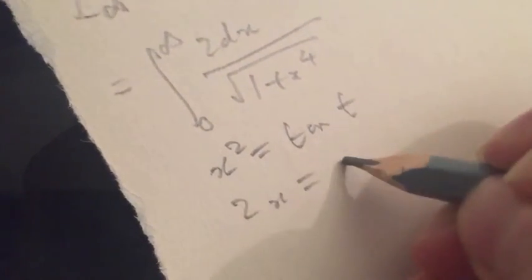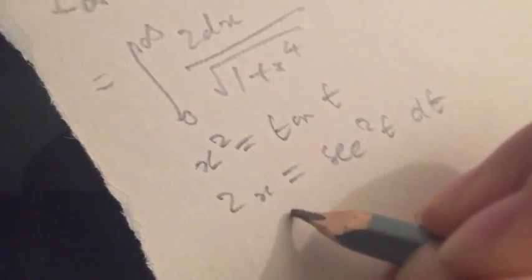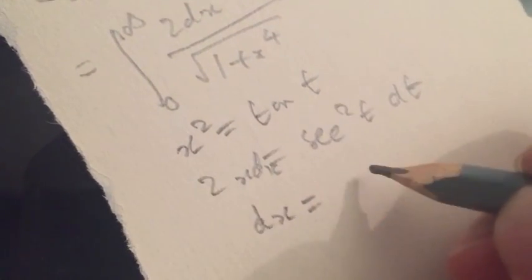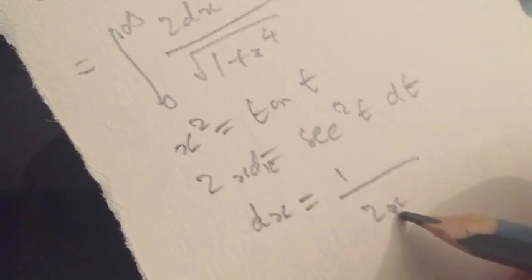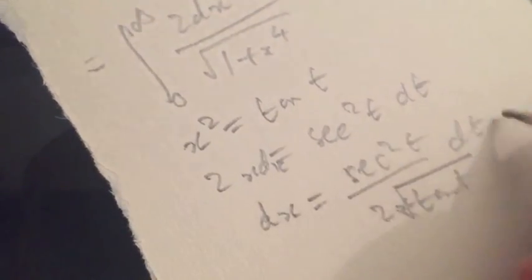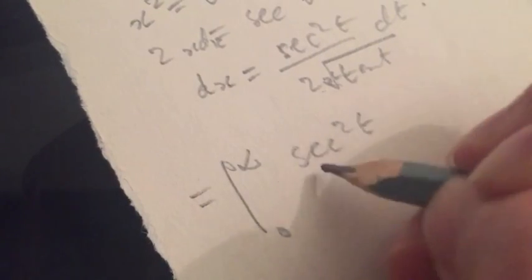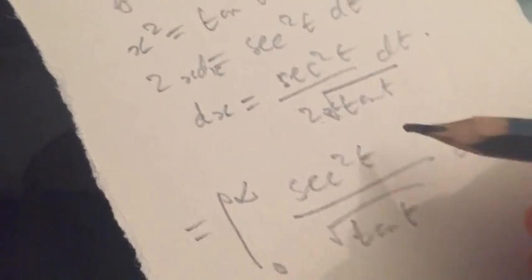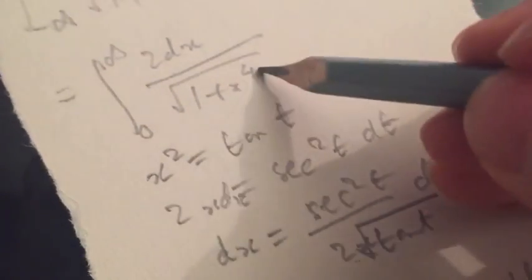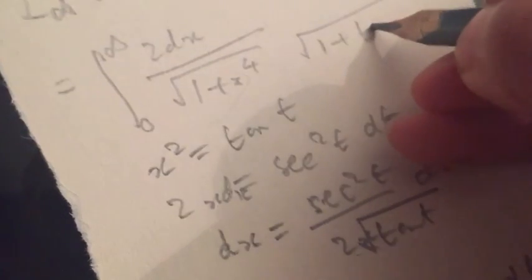So 2x equals sec² θ dθ, which means dx equals 1 over 2x times sec² t dt, where x equals the square root of tan t. The 2 on the bottom cancels with the 2 on top, giving you sec² t divided by tan t dt. Don't forget the integrand — we also have the square root of 1 plus tan² t in the denominator, which is just sec t.